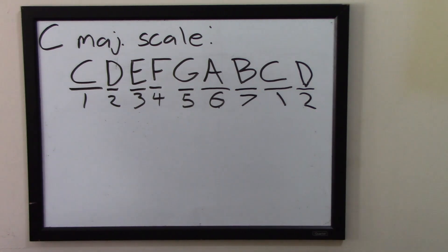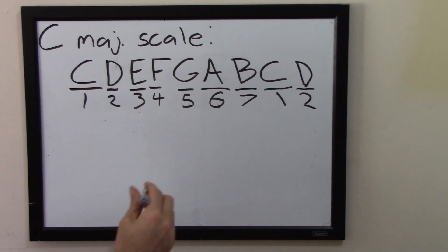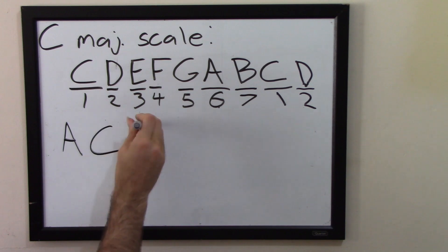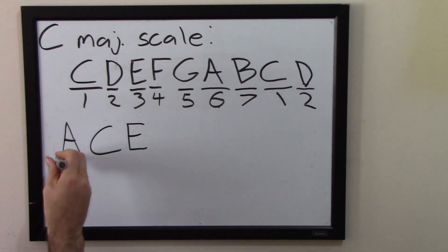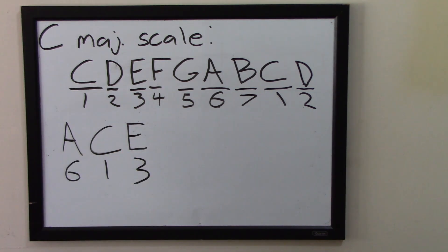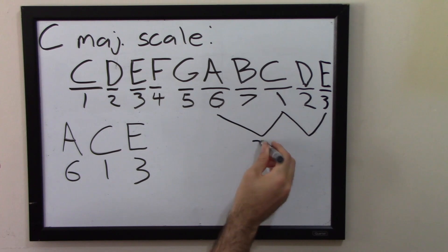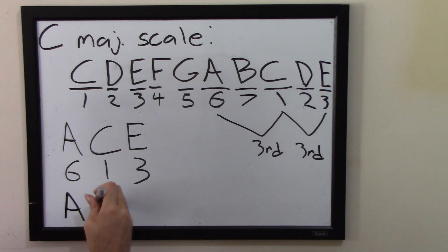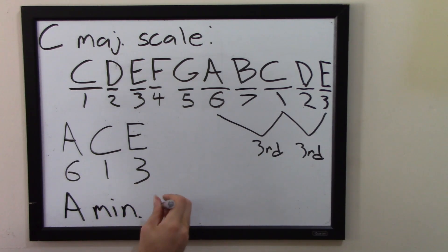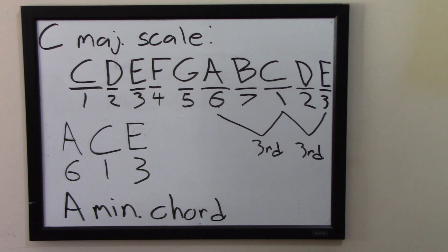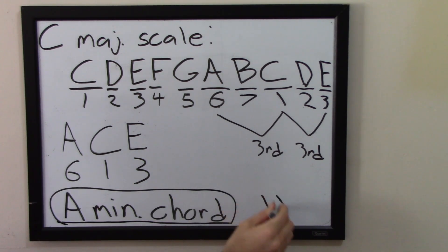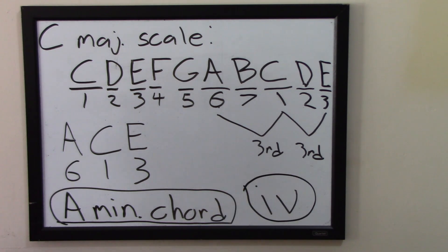Two more. If you start on the 6th degree of the scale, you'll get the 6th, the 1st, and the 3rd. That's A, C, and E. A, C, and E are an A minor triad. You can represent that with a lowercase Roman numeral 6.